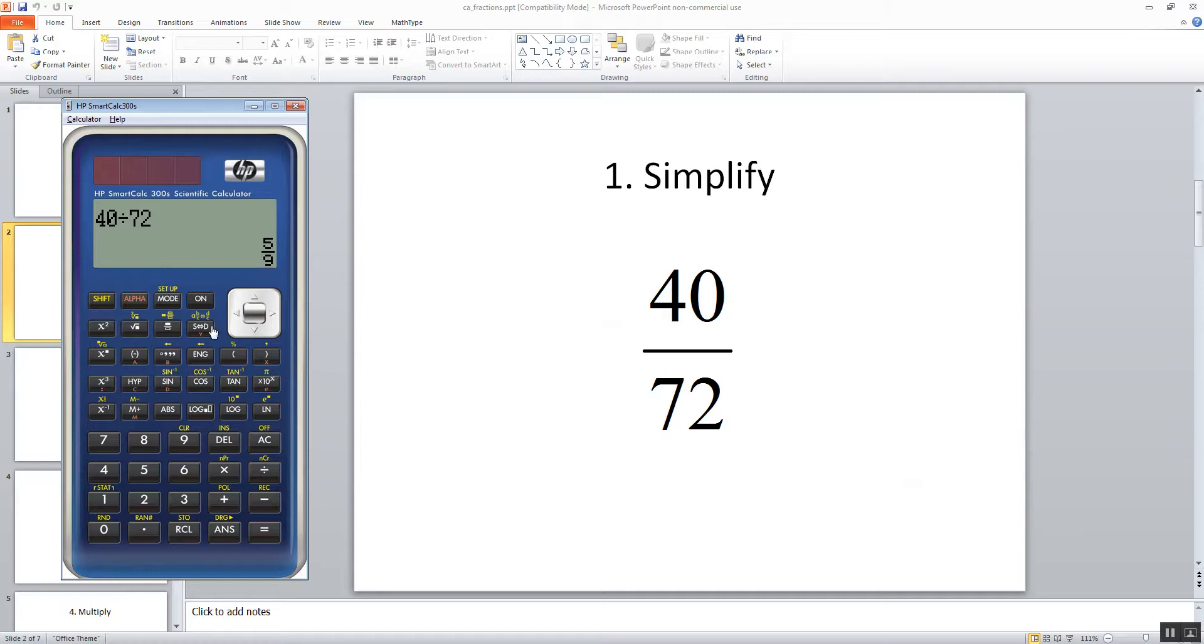Now, if it gives you a decimal for some reason, there's a button here that says S, and then there's arrows, and then D. This is what switches back and forth between fraction and decimal form. So see, if I just click it one time, it becomes a decimal. One more time, it becomes a fraction.